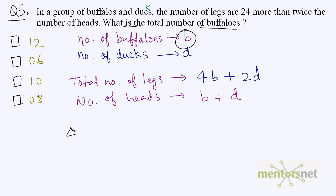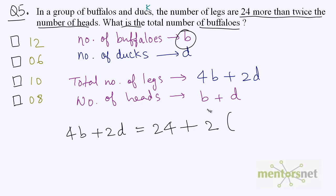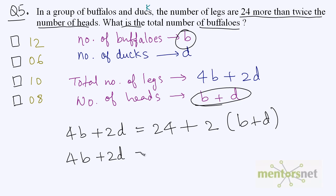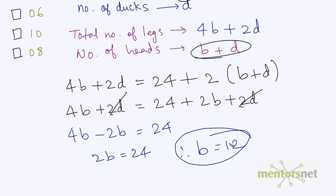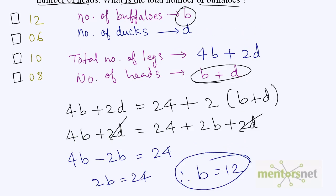So 4b plus 2d equals 24 plus 2 times (b plus d), which gives 4b plus 2d equals 24 plus 2b plus 2d. The 2d terms cancel out, leaving 4b minus 2b equals 24, so 2b equals 24. Therefore b equals 12. The number of buffalos is 12.